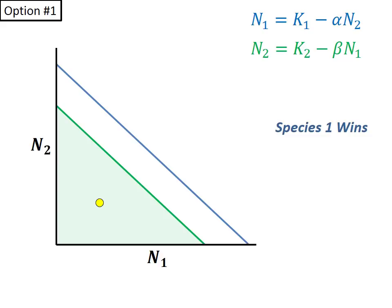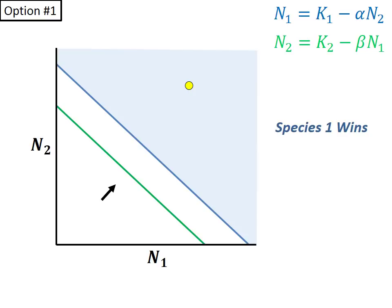Note that we are below both isoclines, so species 1 is going to increase, and species 2 is going to increase. So our next point might be somewhere about here. In this blue shaded region, we are above both isoclines. So species 1 will decrease, species 2 will decrease, and our next point might be here.